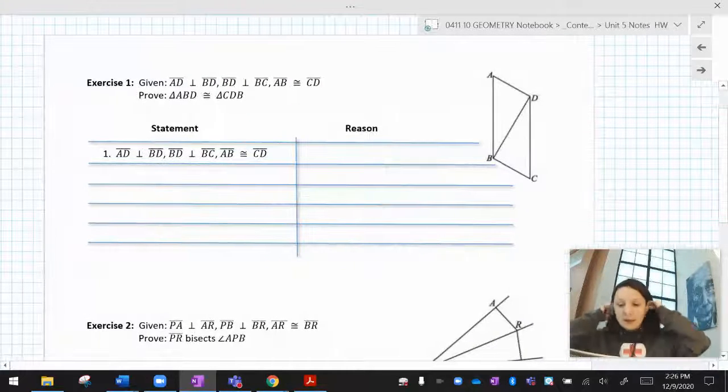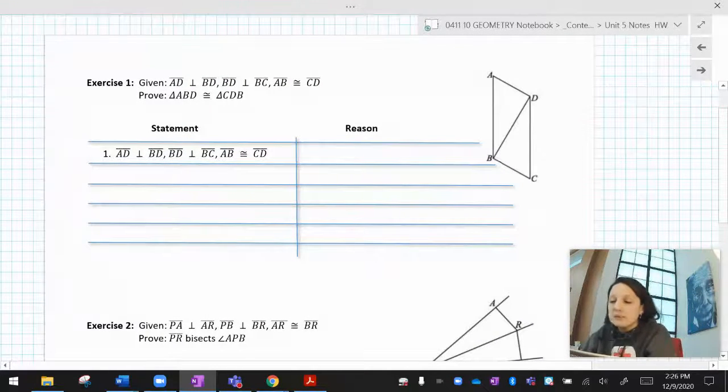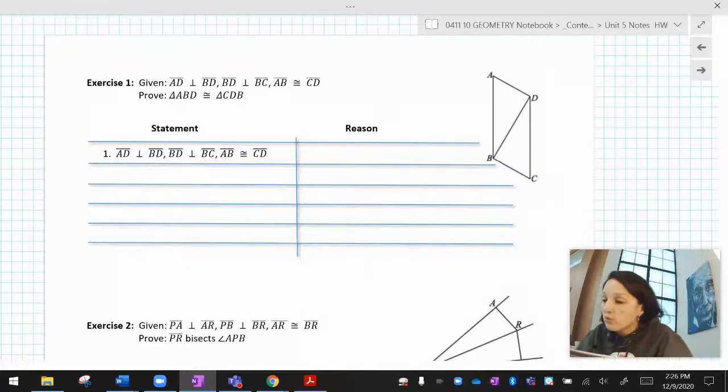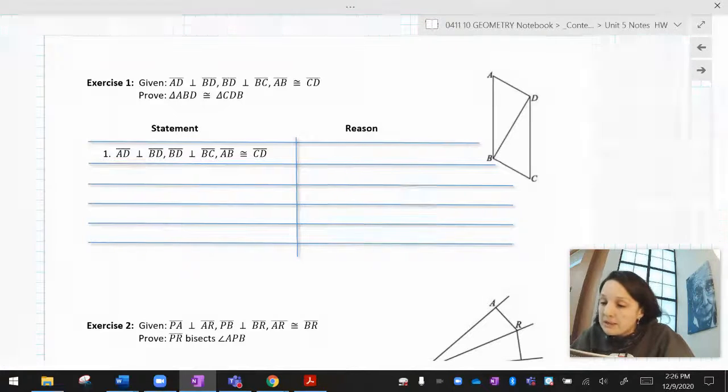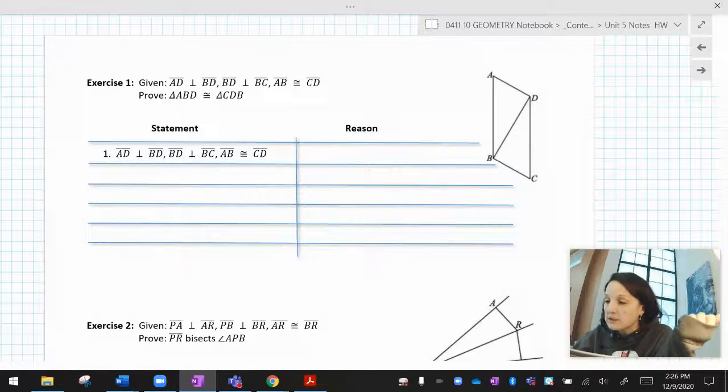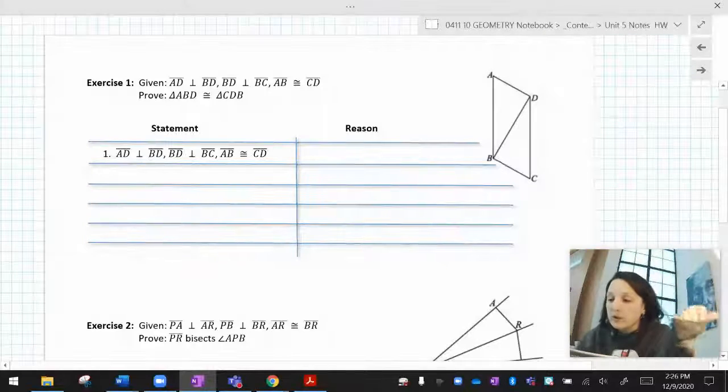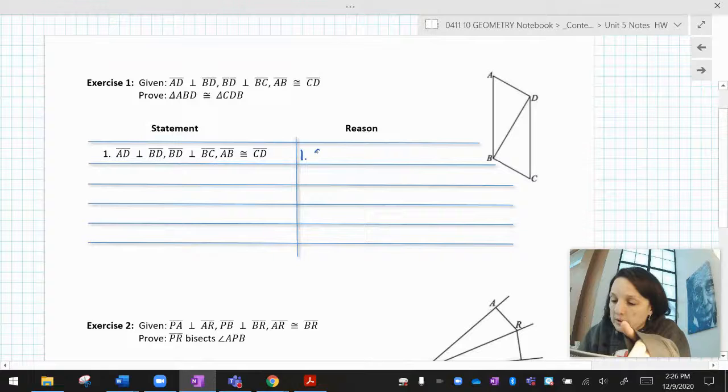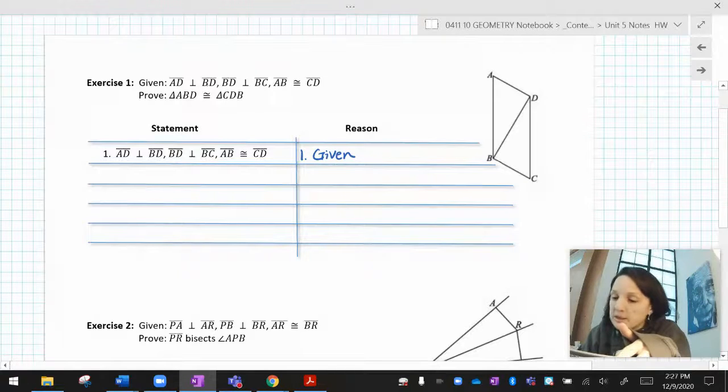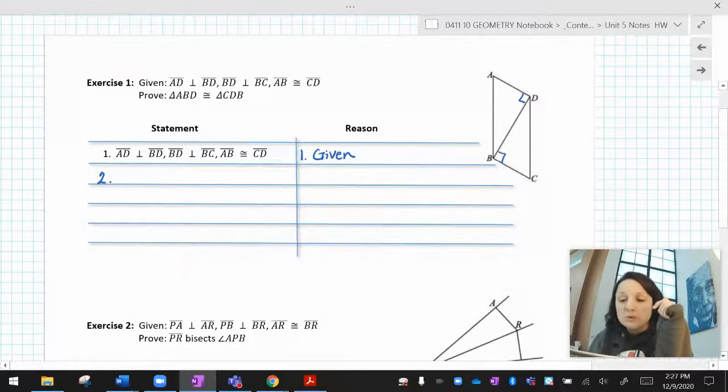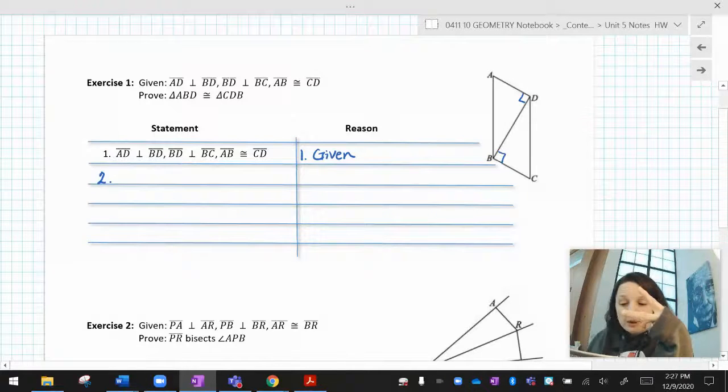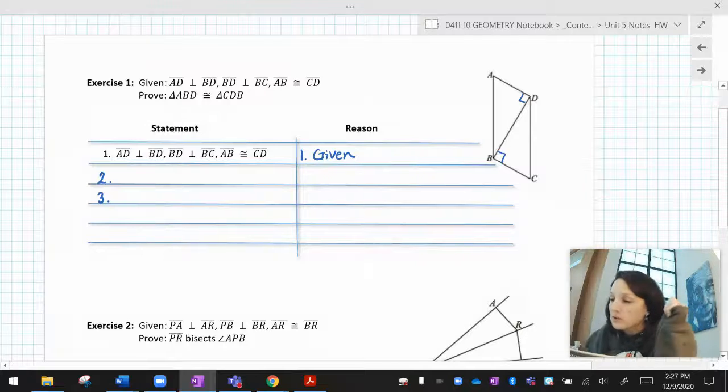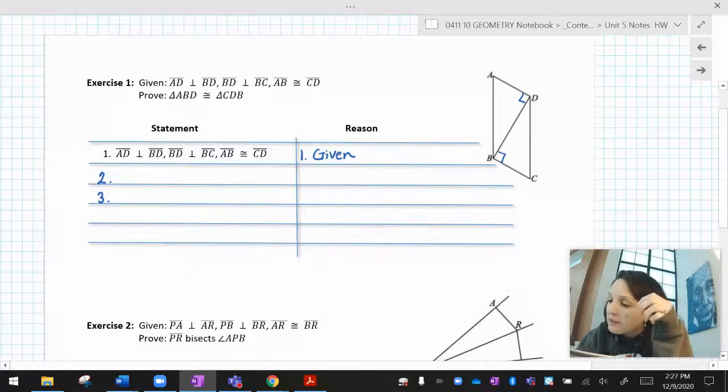In exercise one, we are given that AD is perpendicular to BD and then BD is perpendicular to BC. And AB is congruent to CD. Prove these triangles congruent. So I'm going to start with my givens. AD is perpendicular to BD. And then BD is perpendicular to BC. So when I see perpendicular lines, I'm going to use those to make two statements. One, identify the right angles. Two, state that the right angles are equal.